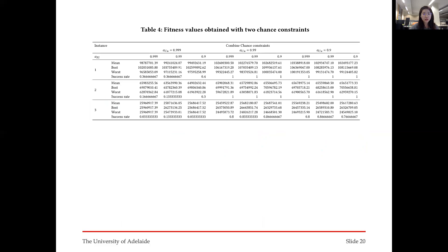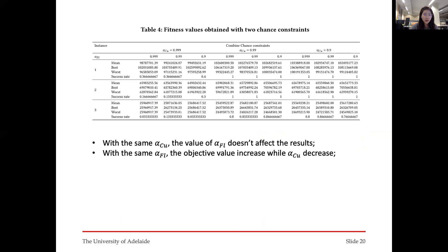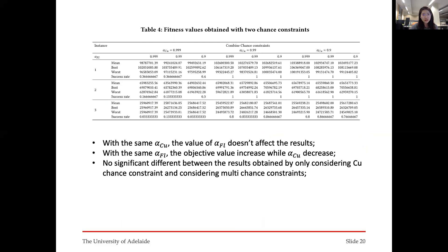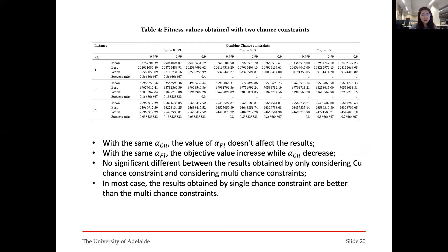This table lists the fitness values obtained with two chance constraints considered simultaneously. We find that with the same alpha-copper, the value of alpha-flotation does not affect the result. With the same alpha-flotation, the objective value increases as alpha-copper decreases — similar to when we consider only the copper chance constraint. So there is no significant difference between results obtained by considering only the copper chance constraint and by considering multiple chance constraints. In most cases, the result obtained by the single chance constraint is better than the multi-constraint case.